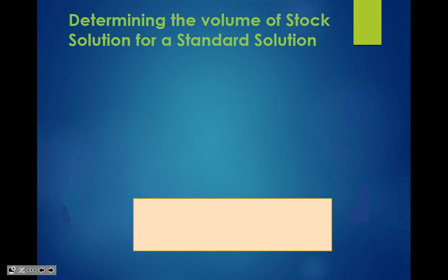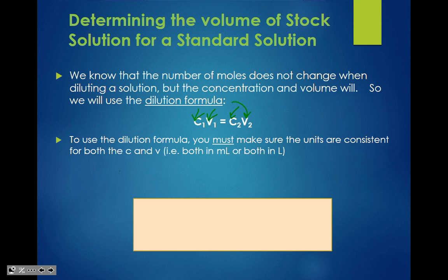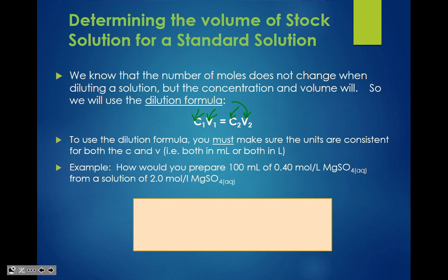For determining the volume of stock solution needed, we know that the number of moles does not change when diluting, but the concentration and the volume will. So we use the formula C1V1 = C2V2, where C1 is initial concentration, V1 is initial volume, and after adding extra volume we get a new concentration C2. Units must be consistent — if V1 is in milliliters, V2 must also be in milliliters. Example: how would you prepare 100 milliliters of 0.4 moles per liter from a 2.0 moles per liter solution?